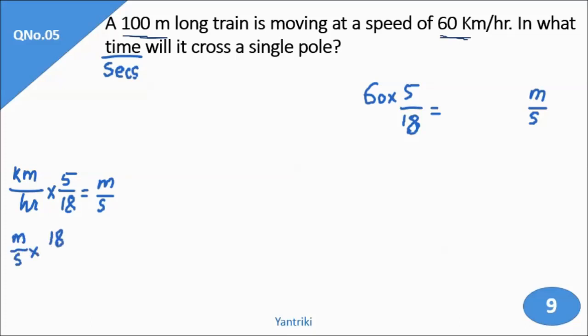And it will get converted into km per hour if you multiply by 18/5. Coming to our question, if I solve this: 60 multiplied by 5/18 gives 300 divided by 18, which simplifies to 50/3 meters per second. So I have converted the speed here.